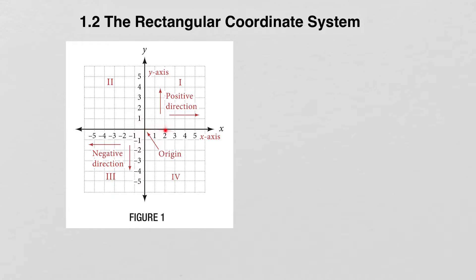If you move to the right on the x-axis, those are positive values for x. If you move to the left, you get negative values for x. Likewise, on the y-axis, moving up gives positive values and moving down gives negative values. Moving to the right or upward is considered a positive direction, and moving downward or to the left is considered a negative direction.